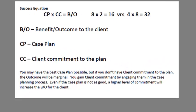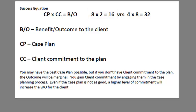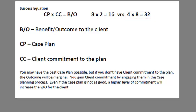For that reason, we've put a success equation together: the case plan times the client commitment to that plan equals the benefit or outcome to the client. If you have the best case plan — an 8 out of 10, above average — but the client commitment is only 2, your total benefit score is 16 out of 100. That's not very good. But if you have a below average case plan with a high level of commitment because the client formed it, you've doubled your success rate. Client commitment is just as important as the case plan, and that's a tough thing for case managers to understand.